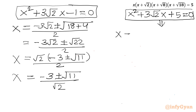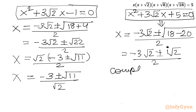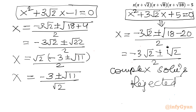For the second equation x² plus 3√2·x plus 5 equals 0, applying the quadratic formula: x equals (minus 3√2 plus or minus √(18 minus 20)) divided by 2. Here we are getting √(negative 2), which gives complex solutions involving i·√2. So we reject this equation. The accepted real solutions are x equals (minus 3 plus or minus √11) over √2, or equivalently √2·(minus 3 plus or minus √11) over 2.